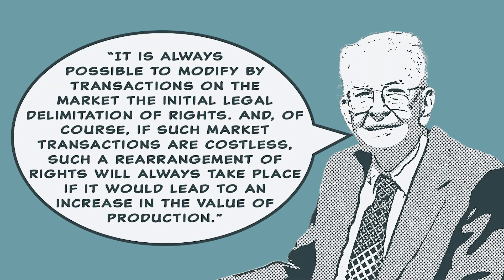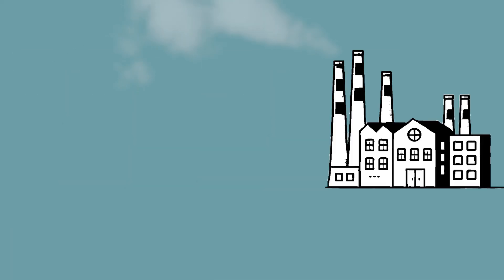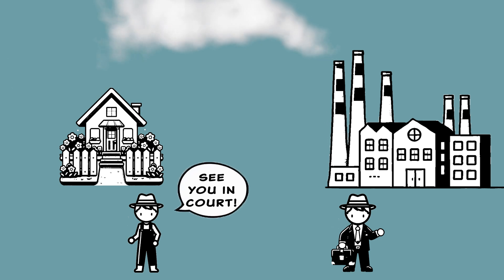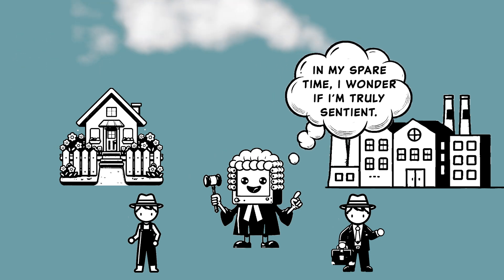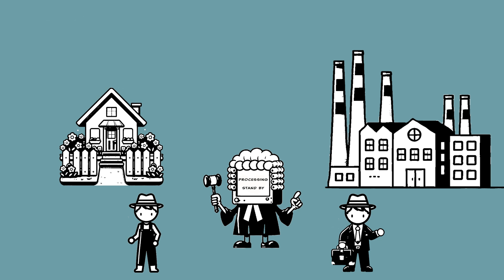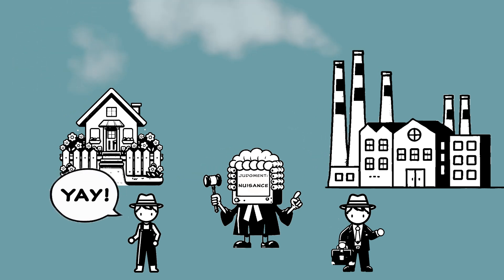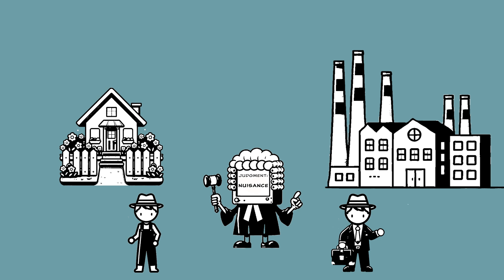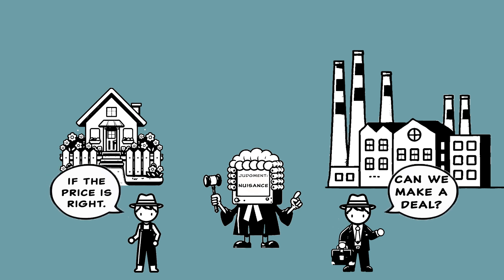To illustrate that, imagine a world with only a smoke-producing factory and its owner, and a house and its owner, who has sued the factory for causing a nuisance. Once a judge decides the nuisance suit, we will have clarity on the property rights of the parties. Either the homeowner's property right includes the right to stop the factory, or the factory owner's property rights include the right to emit smoke even if the homeowner objects. Let's say the homeowner wins and gets a right to an injunction. In a world without transaction costs, what happens next? To know that, we need to know how badly the homeowner wants the smoke to stop.